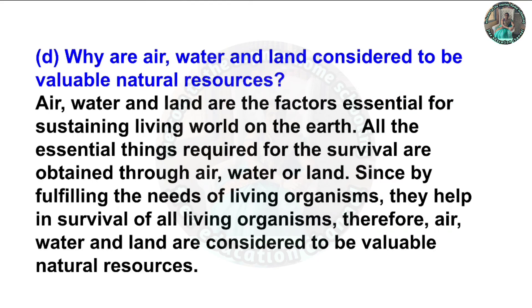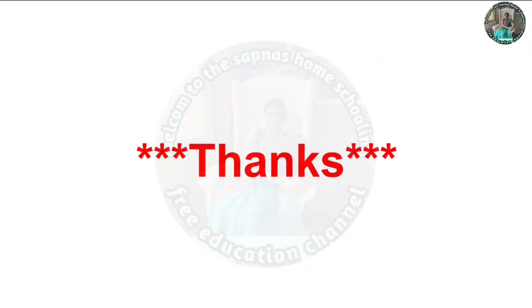Question 7: Why are air, water and land considered to be valuable natural resources? Answer: Air, water and land are factors essential for sustaining the living world on earth. All the essential things required for survival are obtained from air, water and land. Since they fulfill the needs of living organisms and help in the survival of all living organisms, air, water and land are considered to be valuable natural resources. Thank you very much.